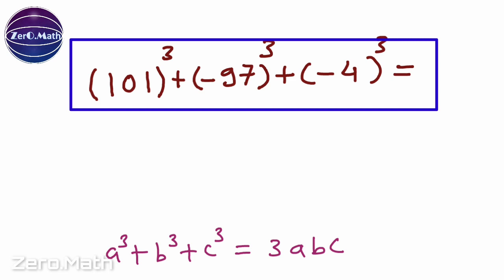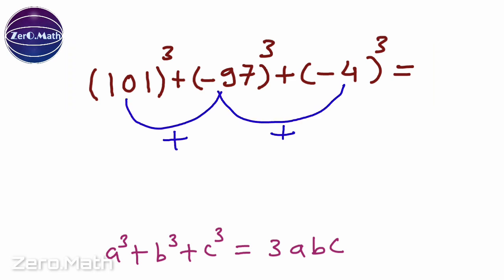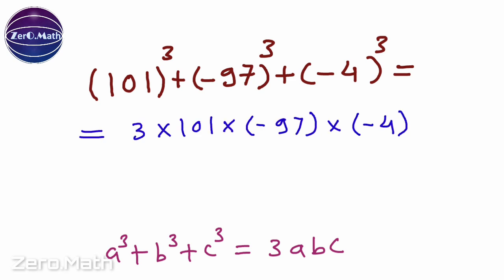We can see here the sum of 101 minus 97 and minus 4 equals 0, which means we can apply this trick. So let's multiply 101 minus 97 minus 4 by 3 to obtain the answer.